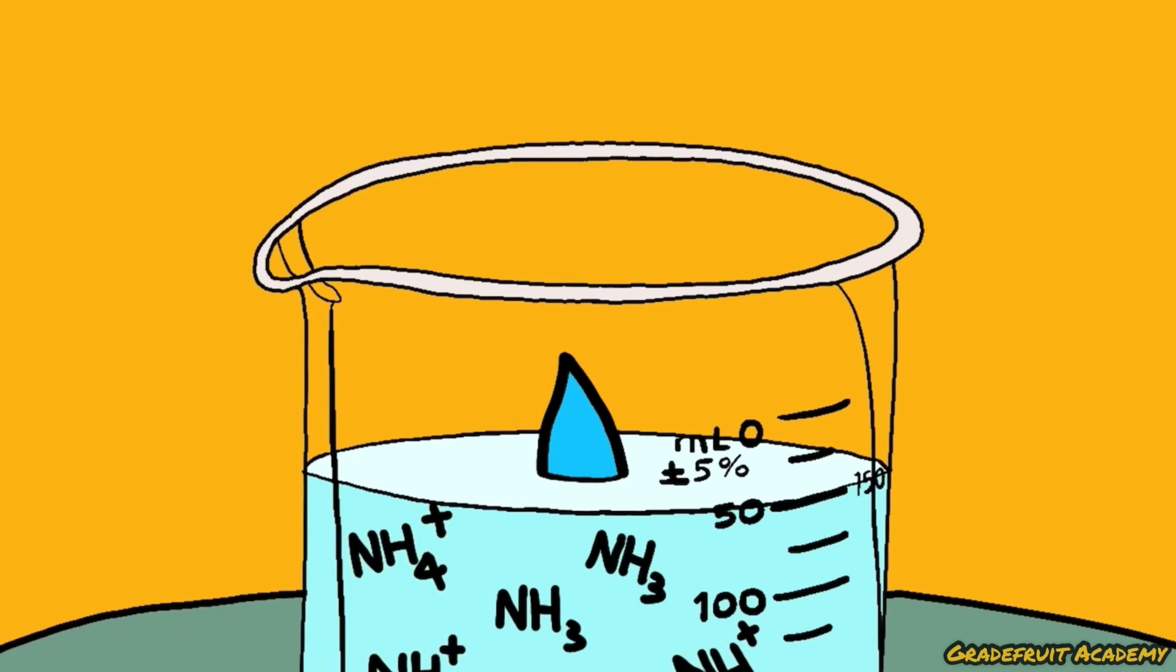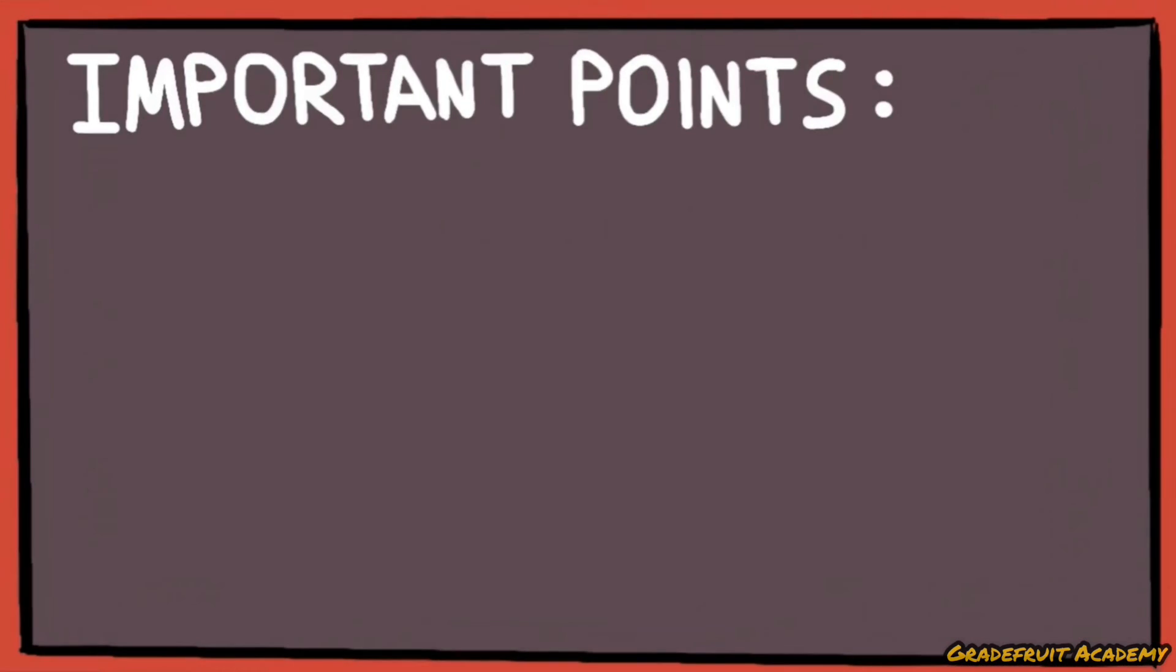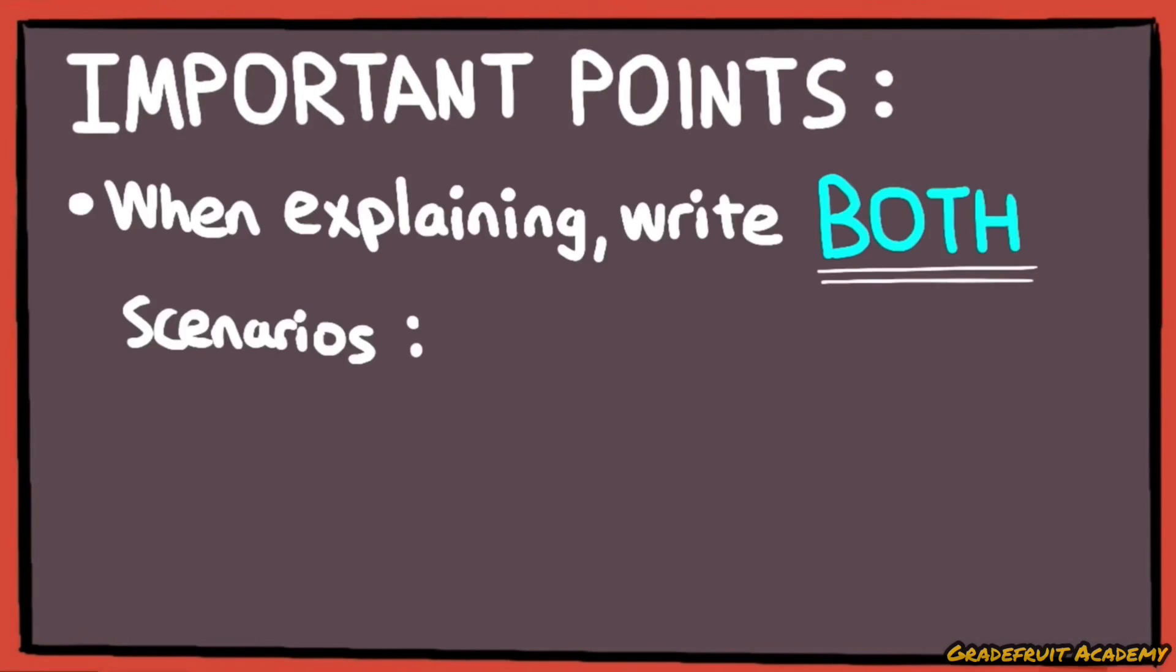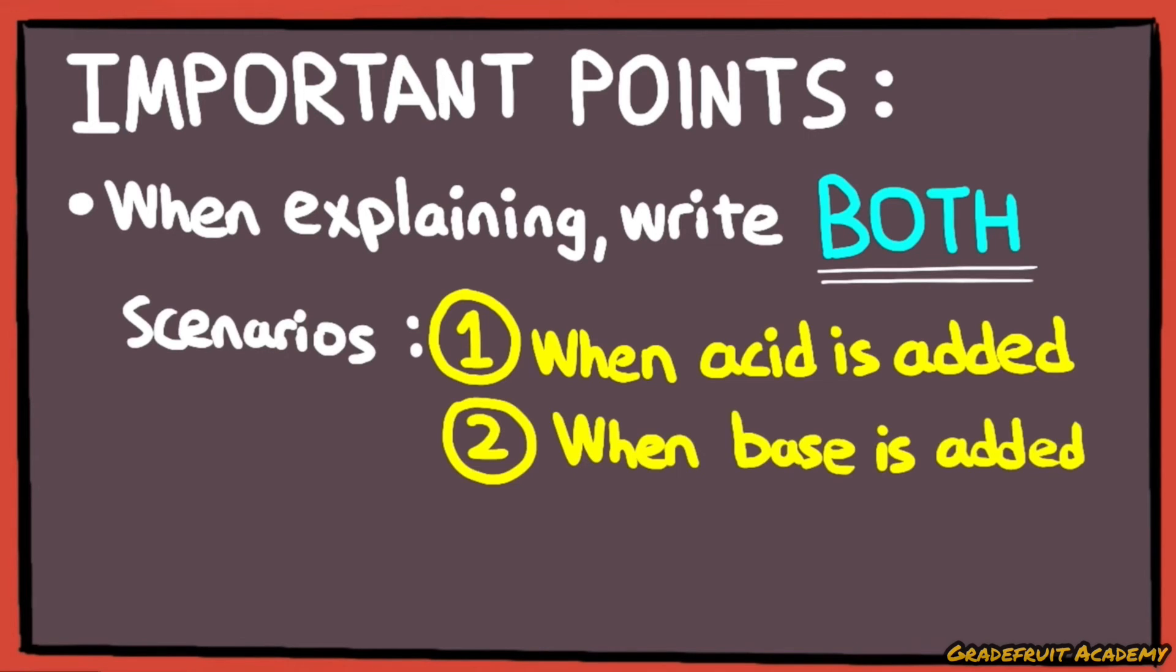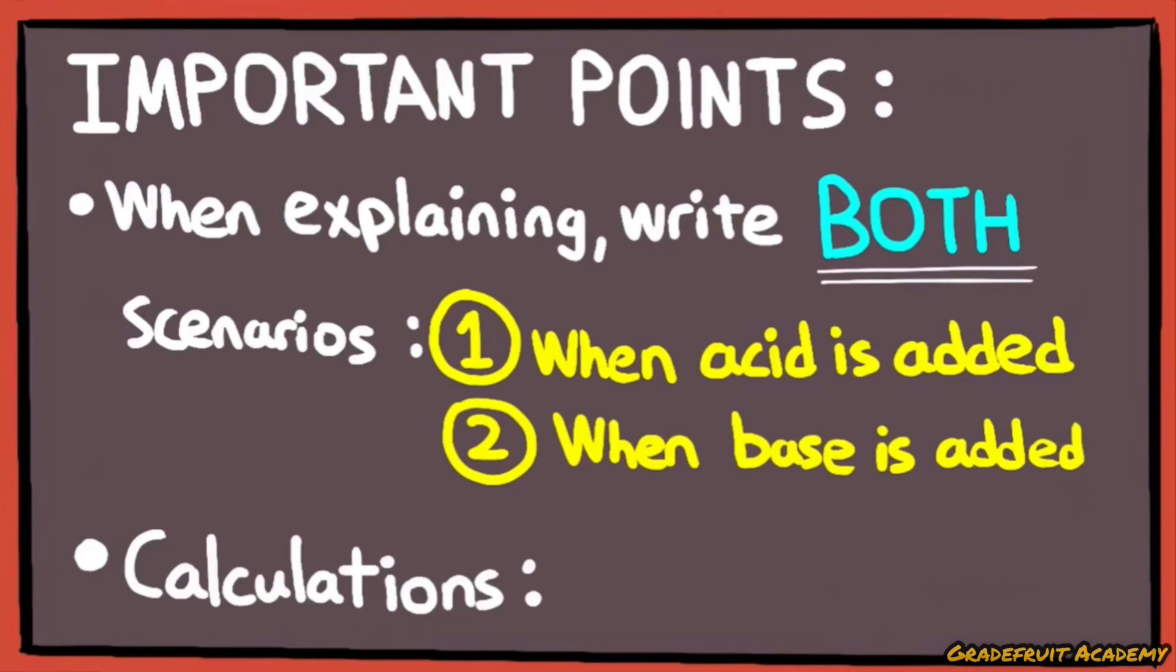And if a small amount of base is added to the same alkaline buffer, the large reservoir of its salt ions will react with the base and remove it from the system. Hence, keeping the pH of the solution relatively constant. So the important things that you should take note of are Number 1, when you're explaining how a buffer solution works, you'll need to write both scenarios when a small amount of acid is added and when a small amount of base is added.